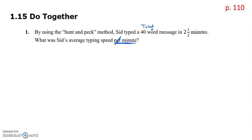We have the total amount of words and the total amount of time. When you have the totals, you only have two choices: you either subtract or you divide. In this case, because we're looking for each and every minute to be the same, we choose division. We take 40 words divided by two and a half, setting up 40 as a fraction over one.